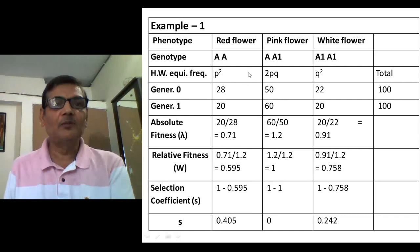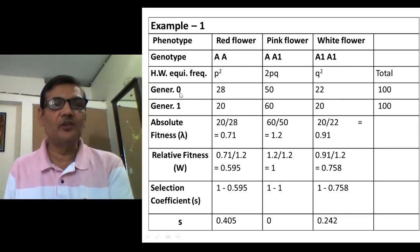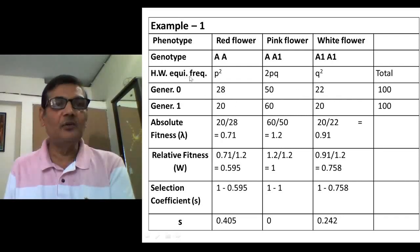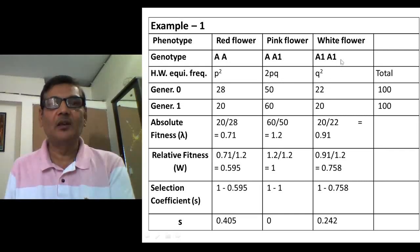Suppose you have collected the number of individuals present in a specific generation. In generation 0, the number of red-flowered plants is 28, pink-flowered plants are 50, and white-flowered plants are 22, for a total of 100. Hardy-Weinberg equilibrium frequencies can be indicated as P² for one homozygote, 2Pq for heterozygotes, and Q² for the other homozygote such as white-flowered plants.